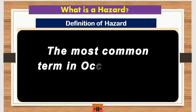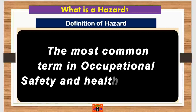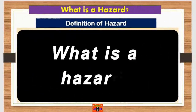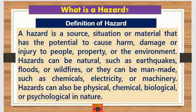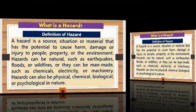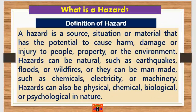The most common and famous occupational safety and health term is hazard. A hazard is a source, situation, or material that has the potential to cause harm, damage, or injury to people, property, or the environment. Hazards can be natural such as earthquakes, floods, or wildfires, or they can be man-made such as chemicals, electricity, or machinery. Hazards can also be physical, chemical, biological, or psychological in nature.